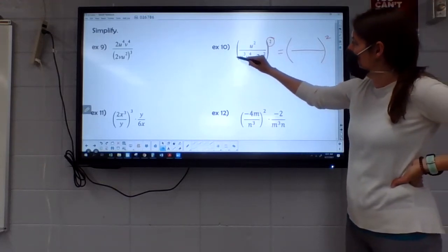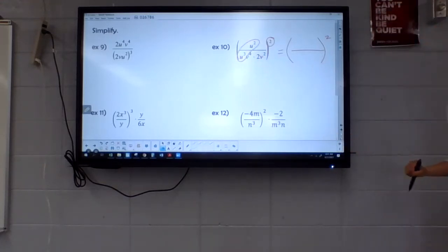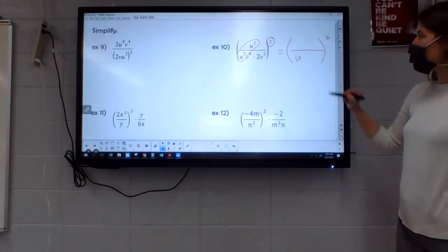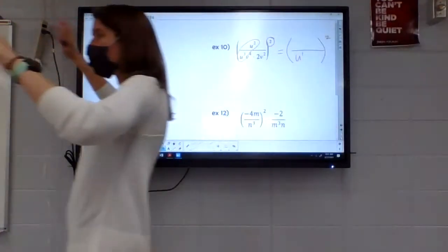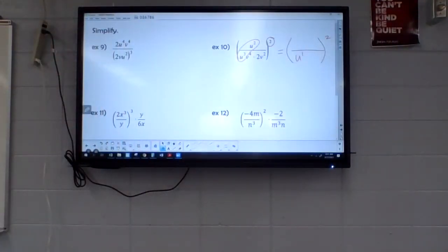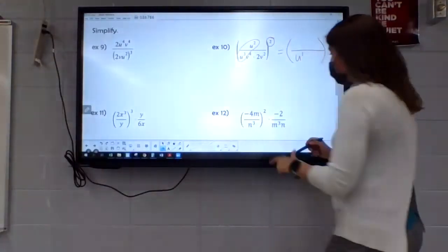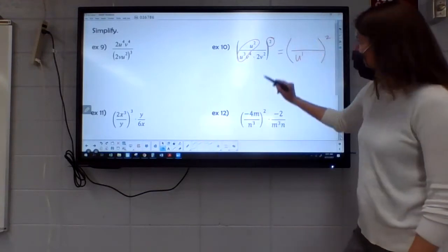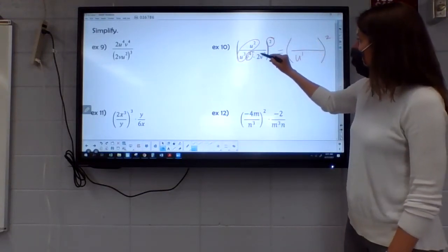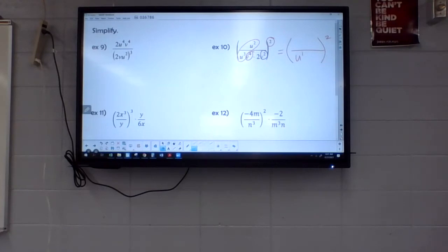Okay, so I'm going to look at this. u to the second over u to the third. Where are there more? Bottom. How many more? One. So u to the first is going to end up on the bottom. What I just did was I had two bases, and now I've got it down to one, which is a lot easier. Okay, also on the bottom down here.